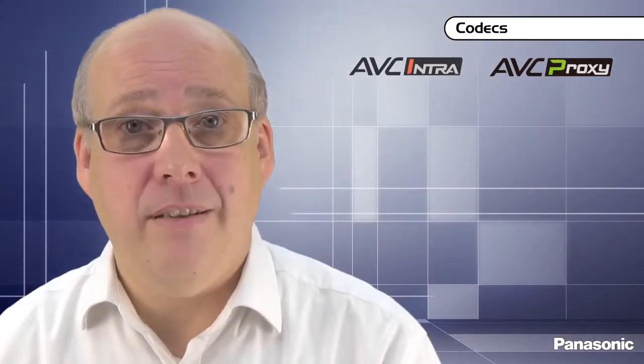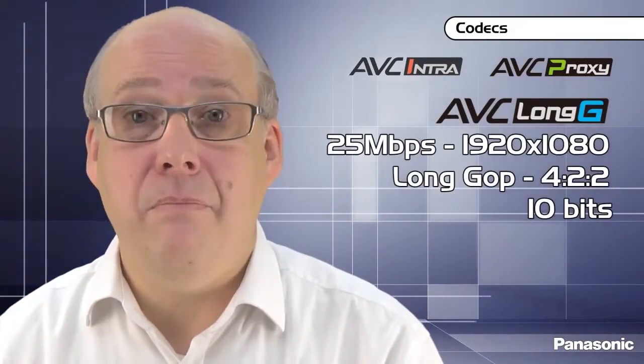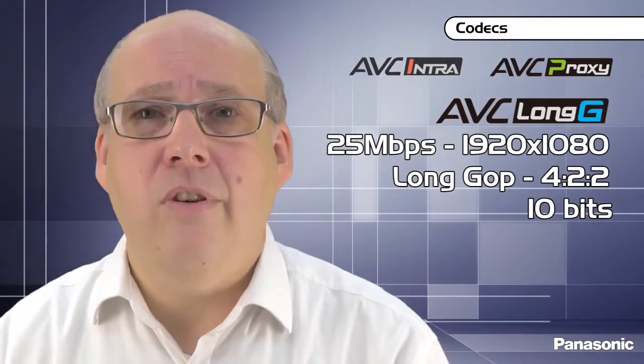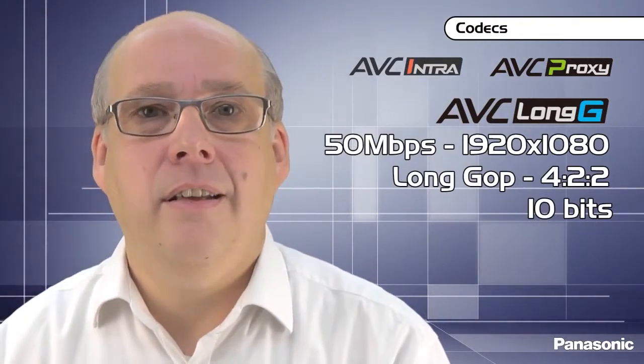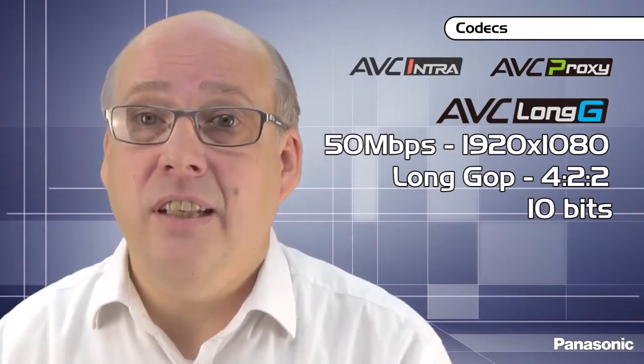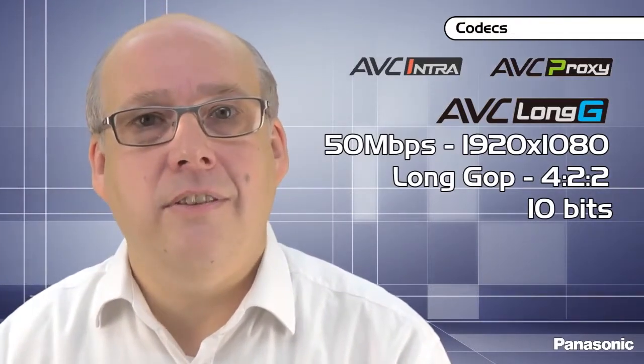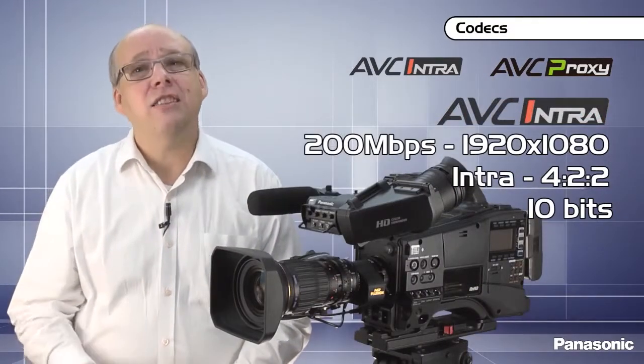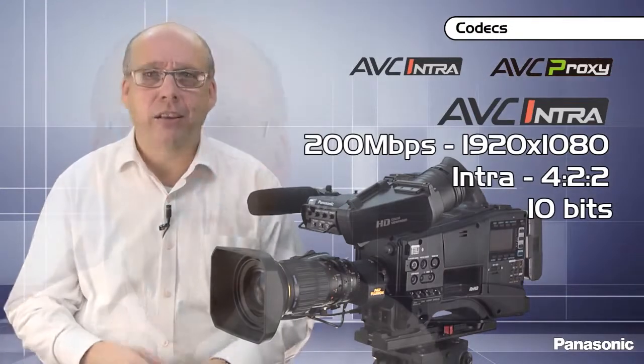One at 25 megabits, the AVC Long G25, at 422 10 bits, full HD in H.264 for a quick workflow. One at 50 megabits per second, the AVC Long G50, again 422 10 bits, full HD H.264 for production. And finally, AVC Intra Class 200, again 422 10 bit for mastering and archiving solutions.